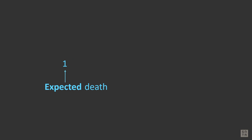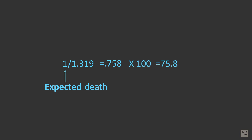The expected mortality rate is calculated by dividing the number of expected deaths by the person years. If there was one death expected, then 1 divided by 1.319 equals 0.758 events per person year. As in the previous waitlist mortality example, 0.758 is multiplied by 100 to get 75.8 events per 100 person years. But which candidates actually contribute to person time on the waitlist?